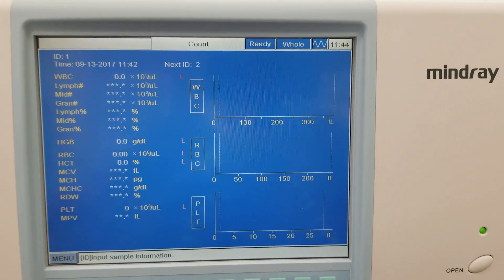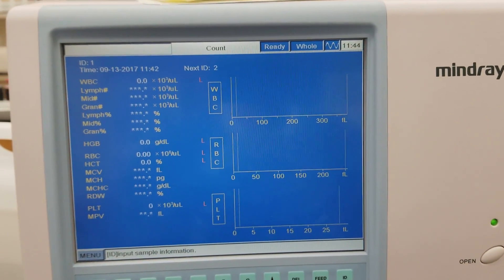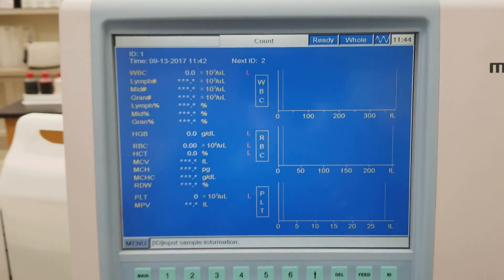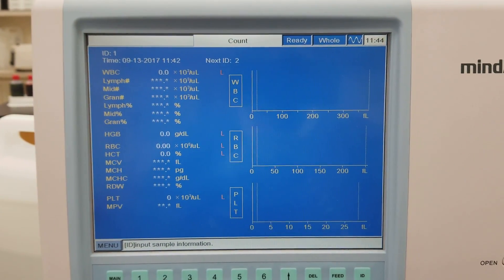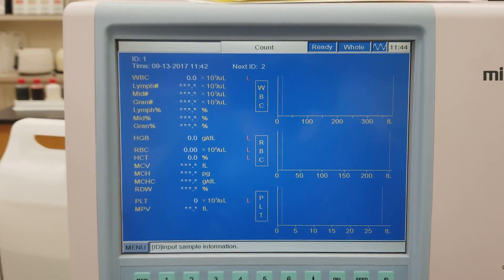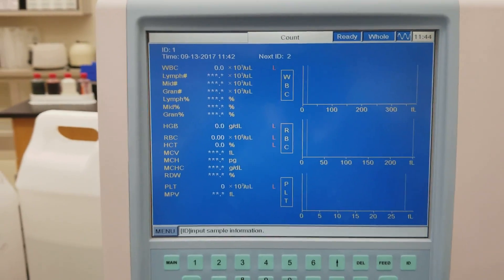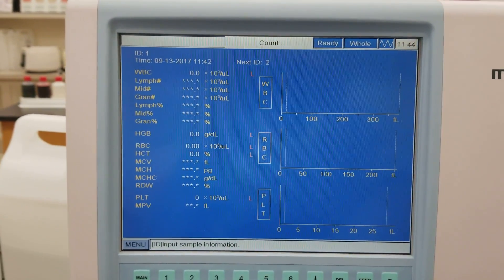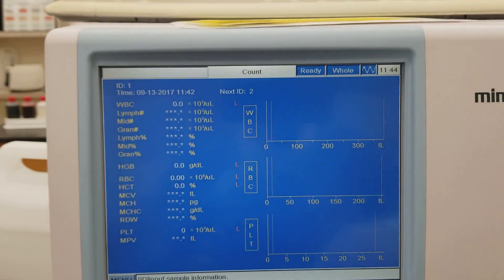In a previous video, you saw me clear flags from the screen and replace a couple of reagents to make sure the flags didn't come back and that we had everything good. I ran alcohol as a patient to get rid of the last abnormal background and hemoglobin errors.